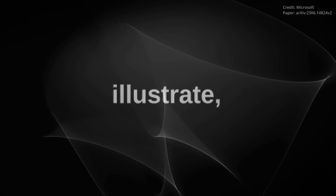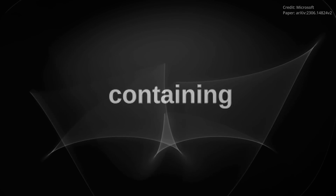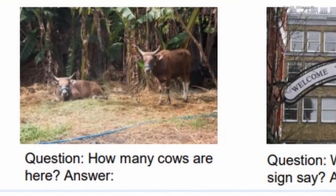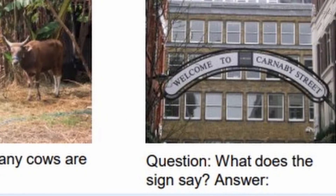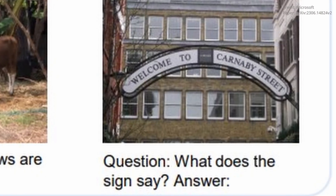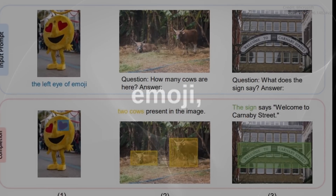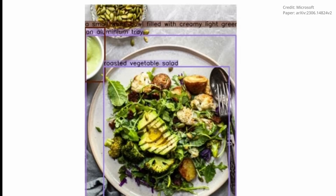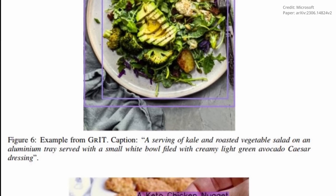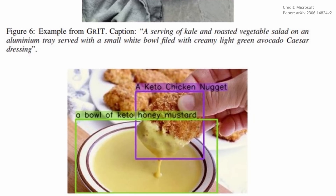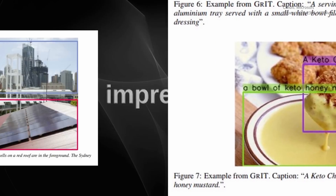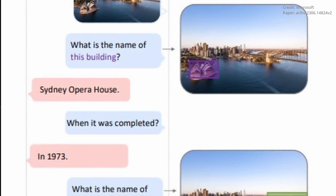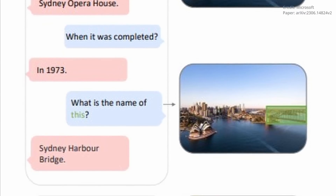To illustrate, consider three images each containing different objects: an emoji, two cows in a dense forest, and a street sign reading "Welcome to Carnaby Street." Prompted to locate the left eye of the emoji, count the number of cows, and read the street sign respectively, Cosmos 2 responded by drawing a bounding box around the requested objects, exhibiting its impressive ability to accurately identify, locate, and enumerate objects and decode text within an image.